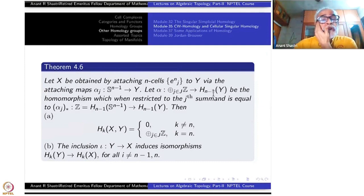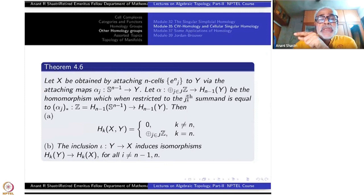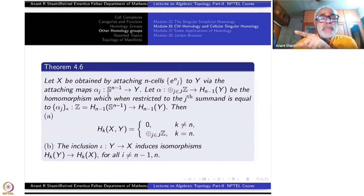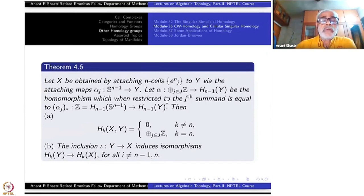What is this homomorphism? It can be defined by specifying it on each component, namely on each generator of the J-th summand, it equals alpha_{J*}: H_{N-1}(S^{N-1}) → H_{N-1}(Y). Since alpha_J is a map from S^{N-1} to Y, passing to homology gives H_{N-1}(S^{N-1}) ≅ Z. That copy is identified with the J-th copy in the direct sum. Once all these are defined, alpha is completely defined — it is the sum total of all these maps.